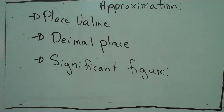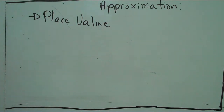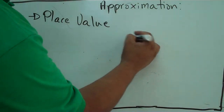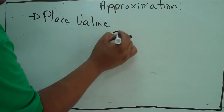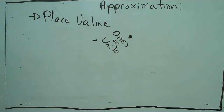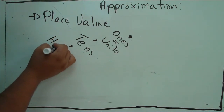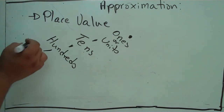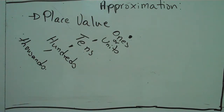Let's quickly take a look at place value. Under place value, what you need to know is the place value chart. From the decimal point going to the left, we have ones or units, followed by tens, followed by hundreds, followed by thousands, then ten thousands, hundred thousands, then millions, and so on going in that direction.